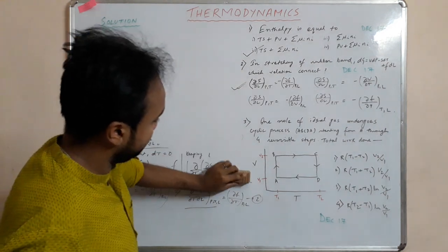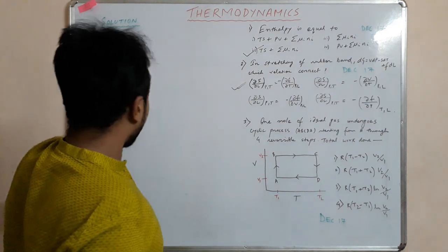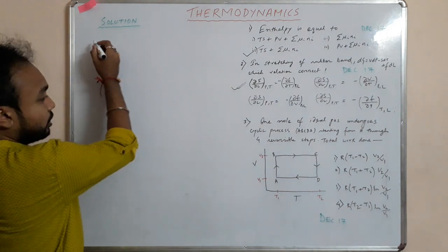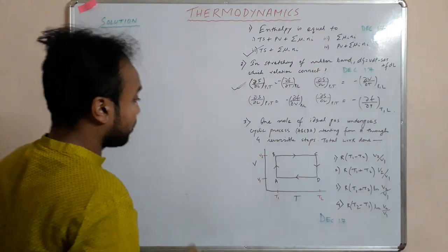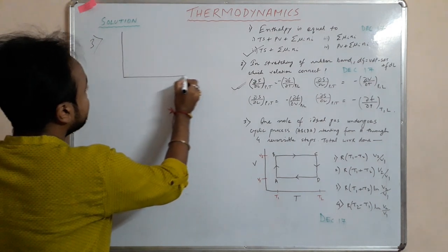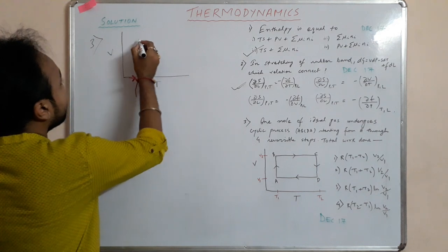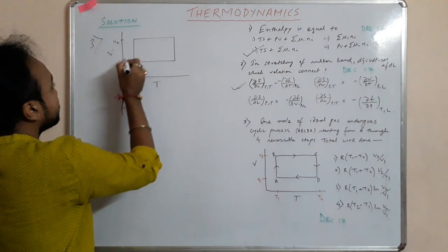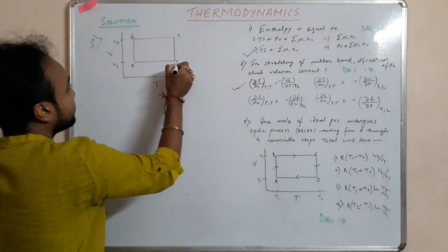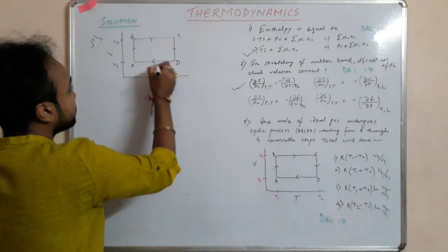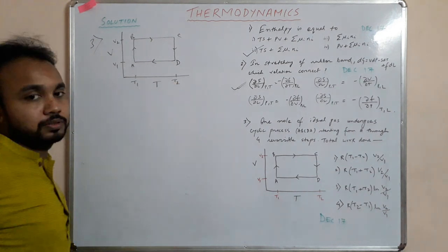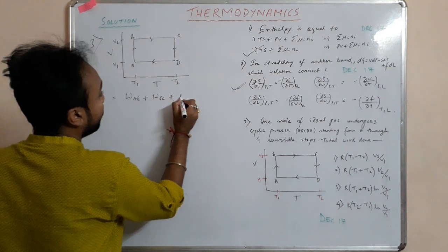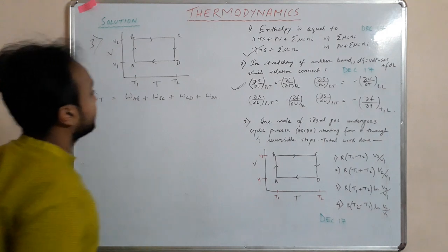Now moving to the last numerical. One mole of an ideal gas undergoes a cyclic process ABCDA through four reversible steps. We are asked to find the total work done. This is a V vs T plot where V₂ and V₁ are the two volumes and T₁ and T₂ are the two temperatures, with the cycle going A→B→C→D→A.